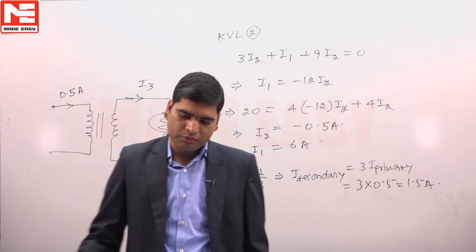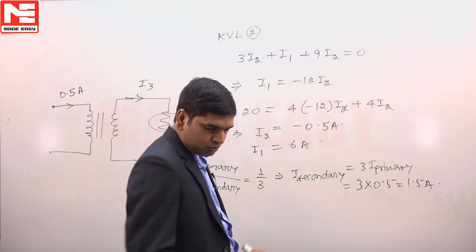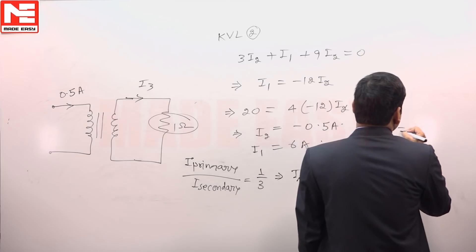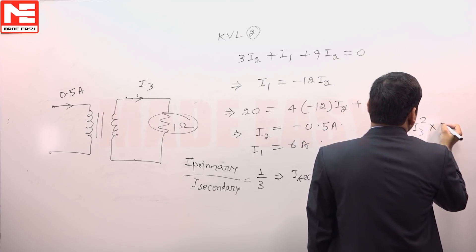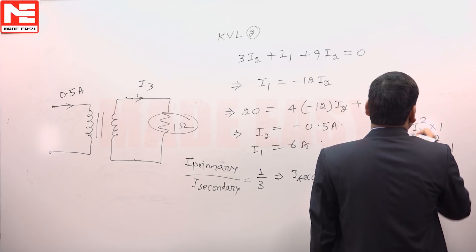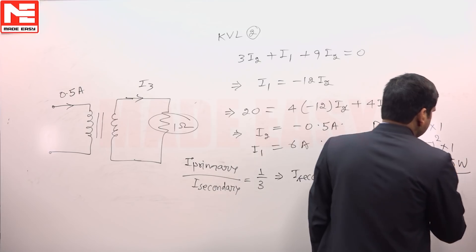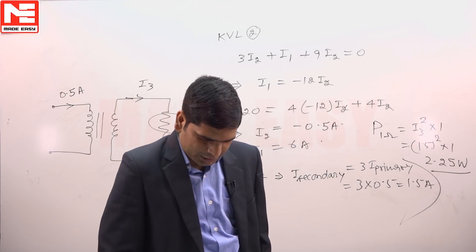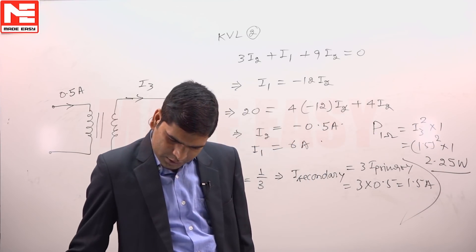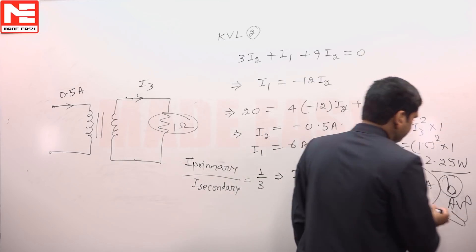Power delivered in 1 ohm resistance: P 1 ohm is equal to I3 square into 1, that is 1.5 square into 1, so this will be equal to 2.25 watts. So 2.25 watt is given in option B, so our choice for this question is option B.